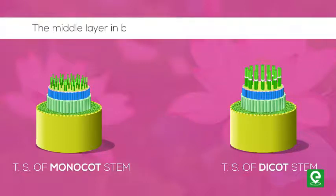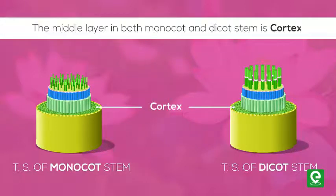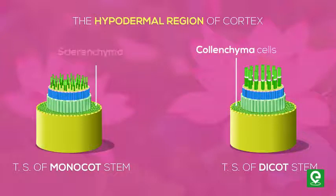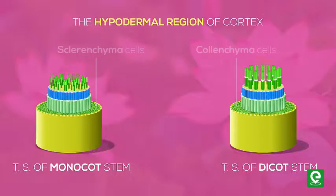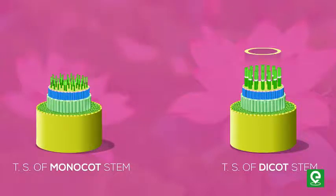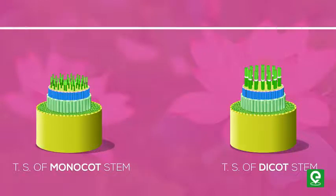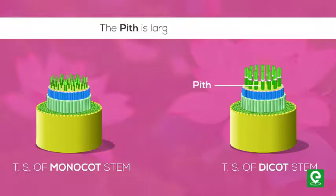The middle layer in both monocot and dicot stem is the cortex. The hypodermal region of cortex in dicot stem consists of colenchyma cells, while in monocot stem sclerenchyma cells are present. The vascular bundles are arranged in the form of a ring in dicot stem, whereas in monocot stems the vascular bundles are in scattered form.